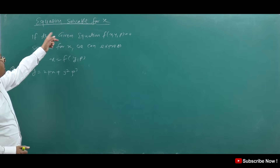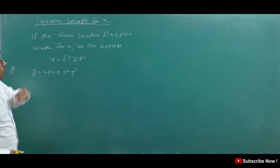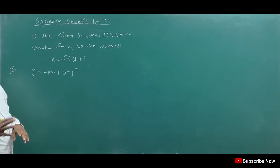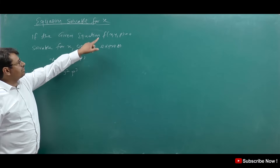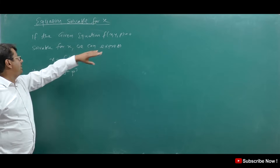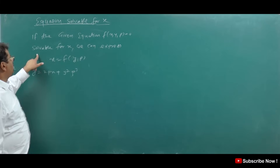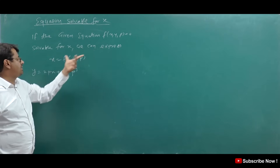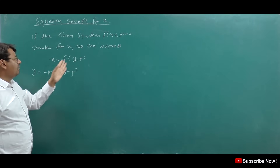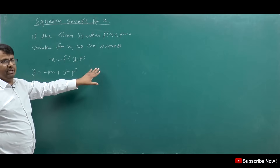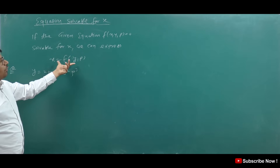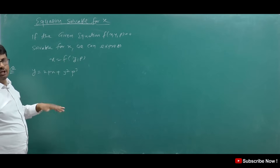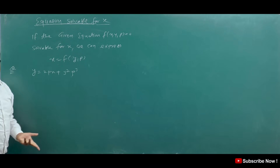How do we explain the equation Solvable for X? If the given equation F(X, Y, P) = 0 is solvable for X, we can express it in the form X = f(Y, P). Just like before we wrote Y equal to something for Solvable for Y, if we can write X in this form, then we will use the Solvable for X method.